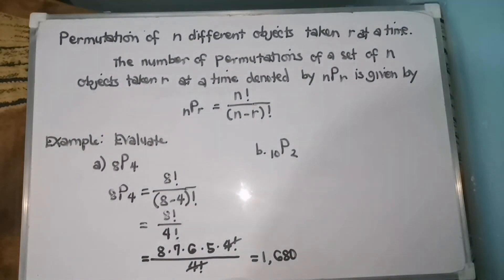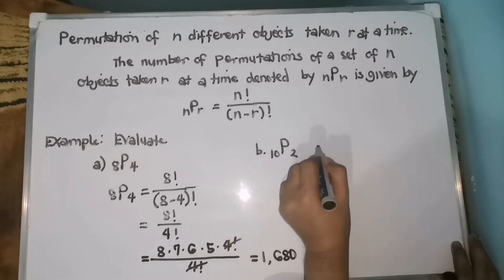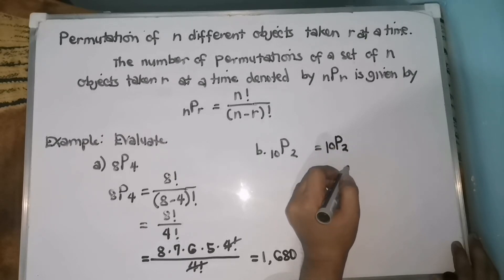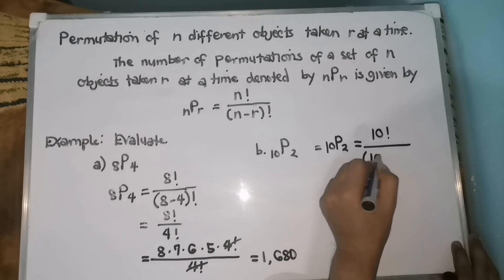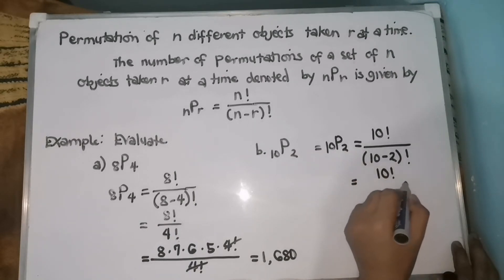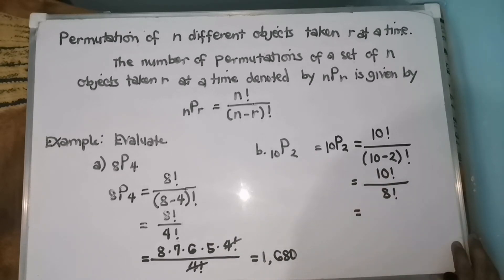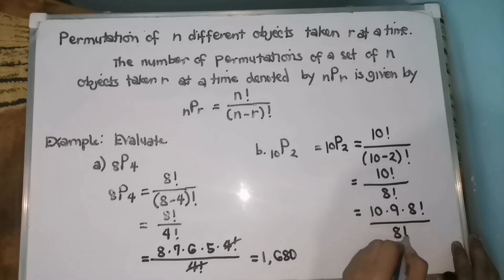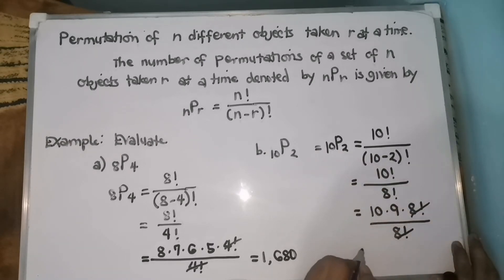Let's move to our next example: the permutation of 10 different objects taken 2 at a time. So, 10P2 equals 10 factorial over 10 minus 2 factorial, which is 10 factorial over 8 factorial. We rewrite 10 factorial as 10 times 9 times 8 factorial, all over 8 factorial. The 8 factorials cancel, and 10 times 9 equals 90. So our answer is 90.